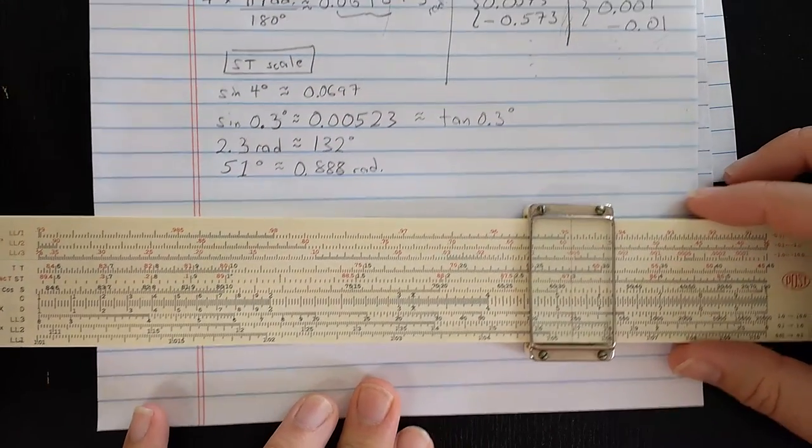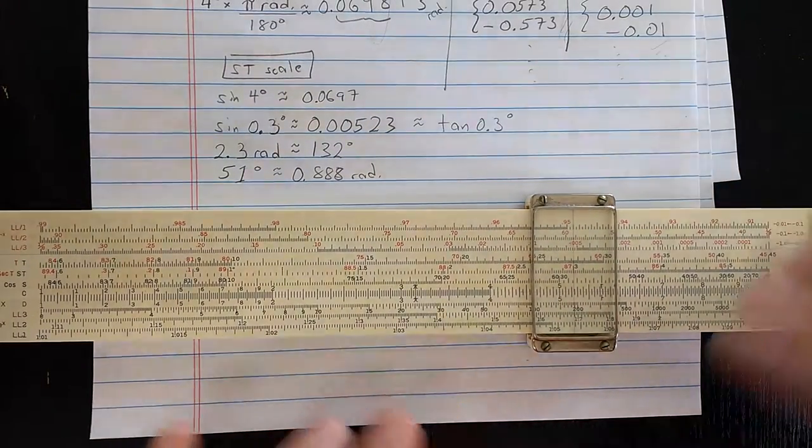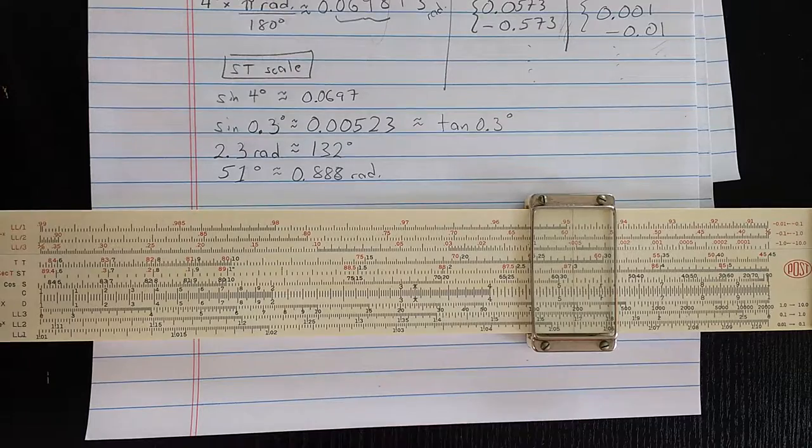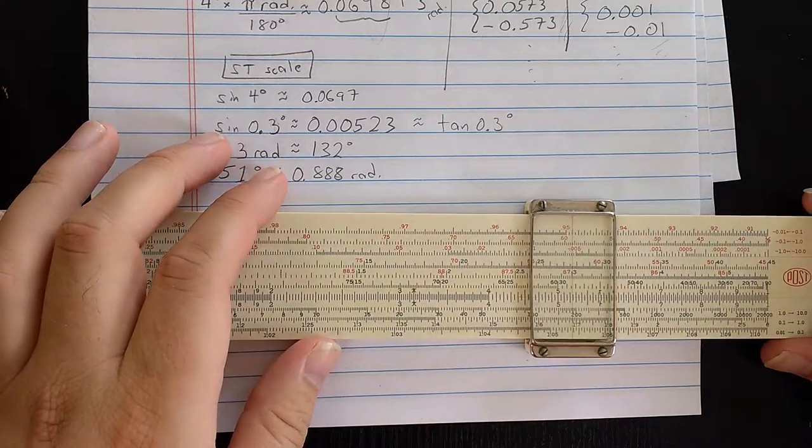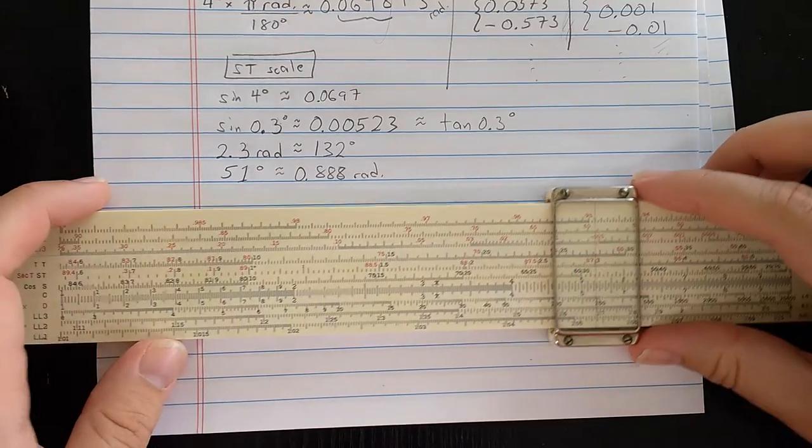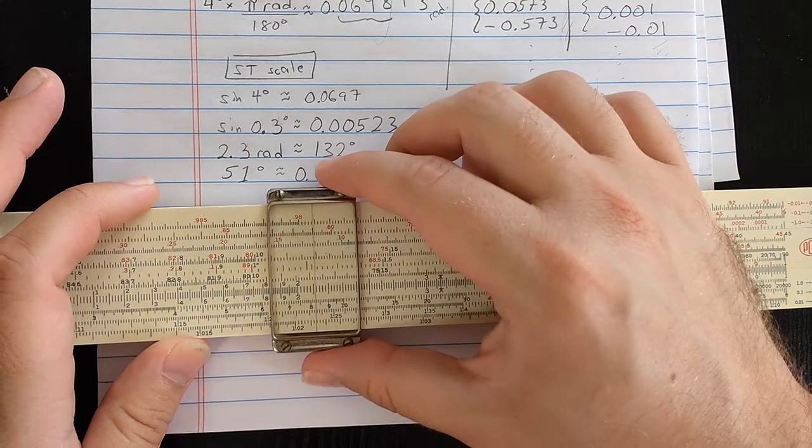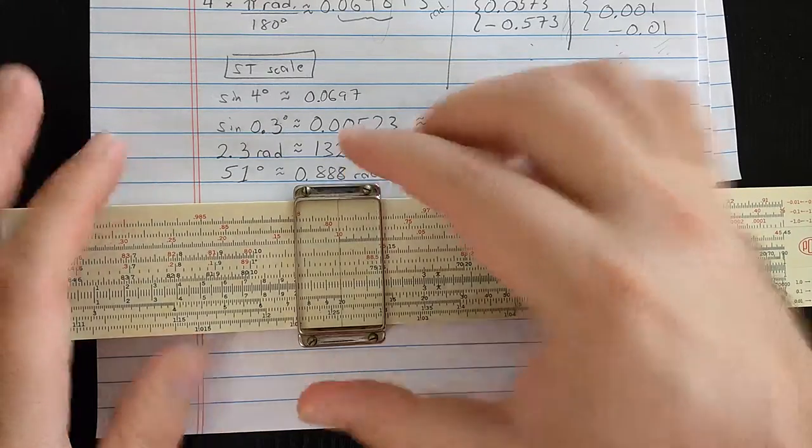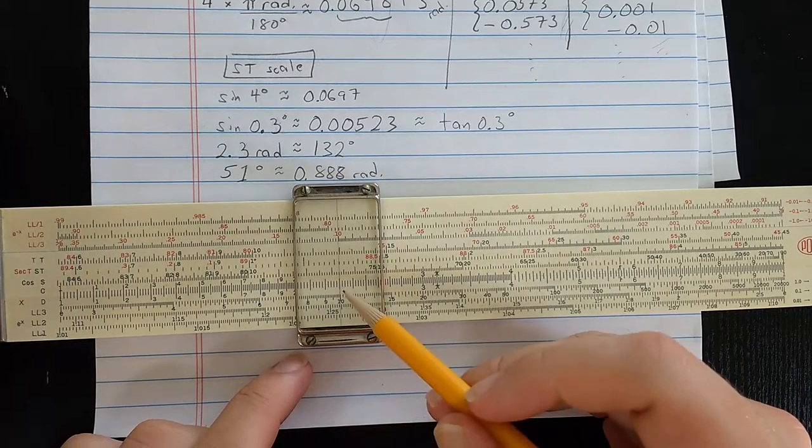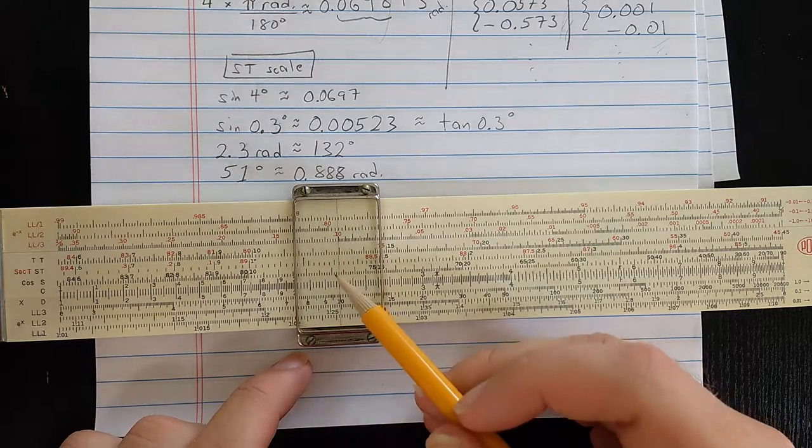One nice consequence is the ST scale does direct conversions between radian measure and degree measure. So say you have 2.3 radians. Let's find that on the D scale. Of course, the slide rule here is closed. So here, 2, 1, 2, 3. 2.3 radians on the D scale.